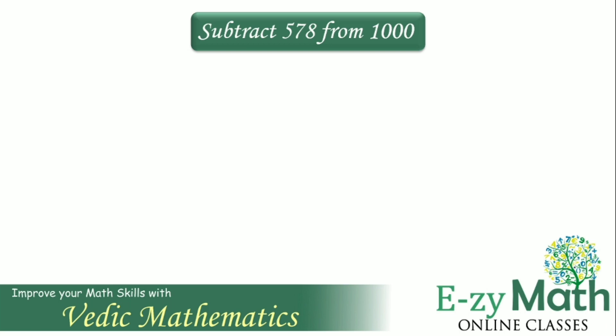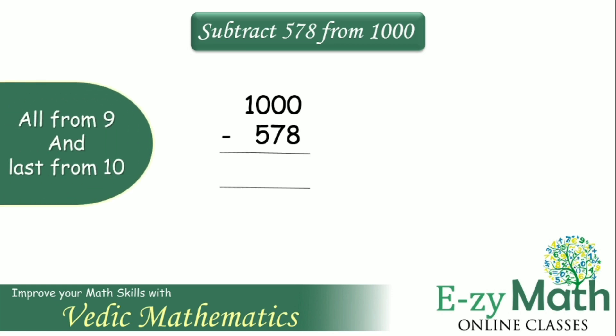Now, let's learn this amazing technique to subtract 578 from 1000. This means we have to find 1000 minus 578. We will be using the technique all from 9 and last from 10.